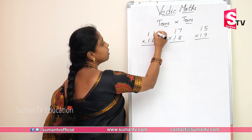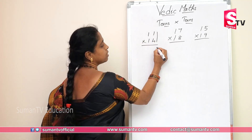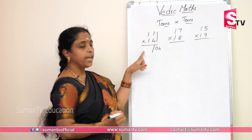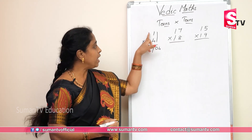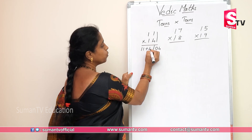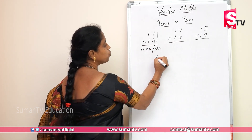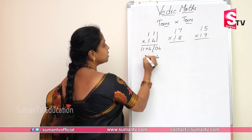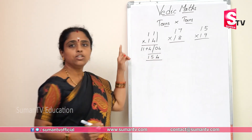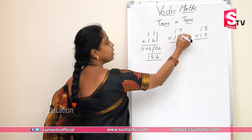First, you take 1 four is 0,4. This is 11 plus 4 — you have to write 11 plus 4. What is the answer? 4. This is 15. So 11 into 14 is 154.